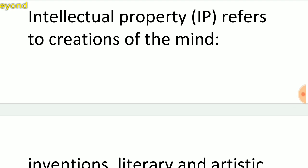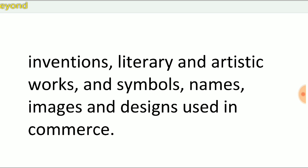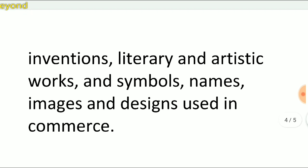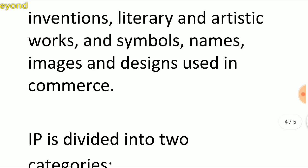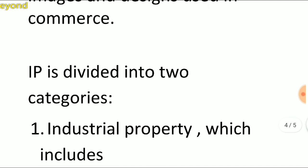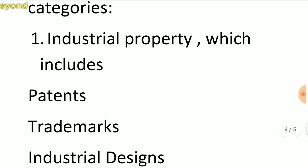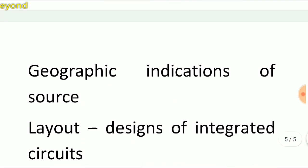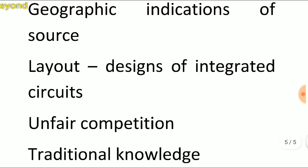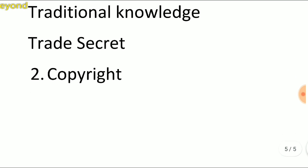Intellectual property refers to creations of the mind. For protection, we need rights, so IP is divided into two categories. First is Industrial Property, which includes patents, trademarks, industrial design, geographical indication of source, layout design of integrated circuits, unfair competition, traditional knowledge, and trade secrets.